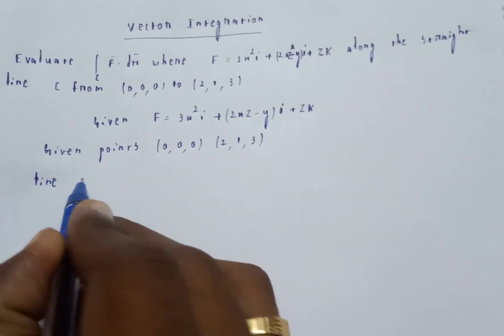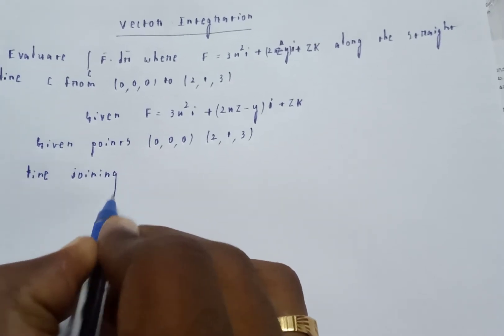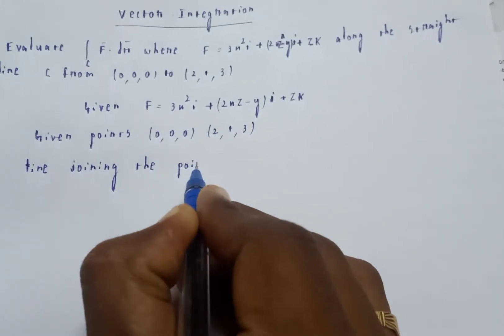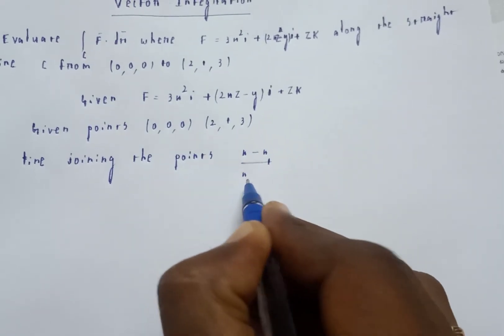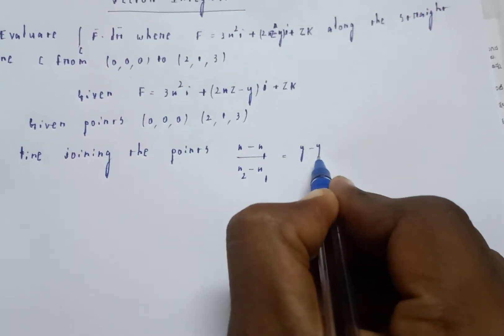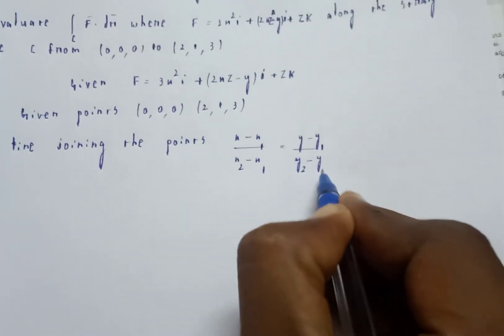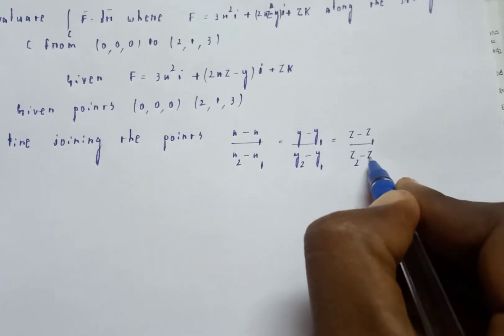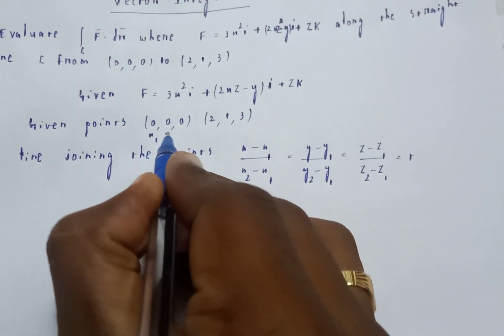The line joining the points formula in 3D geometry: (x minus x1) by (x2 minus x1) is equal to (y minus y1) by (y2 minus y1) equals (z minus z1) by (z2 minus z1) is equal to t.